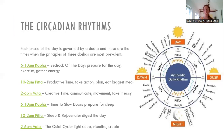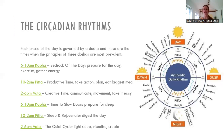Ten in the morning until two in the afternoon is the Pitta time of day — when we're most productive. If you've got a big project at work, this is the time to do it. It's also when you should eat the biggest meal of the day, because you have the fire to digest it. Then from two to six in the afternoon is the Vata time — you might get that afternoon slump because Vata is much more about creative time and taking it a bit easier. So trying to do a big work project in the afternoon may take more energy than it would in the morning.